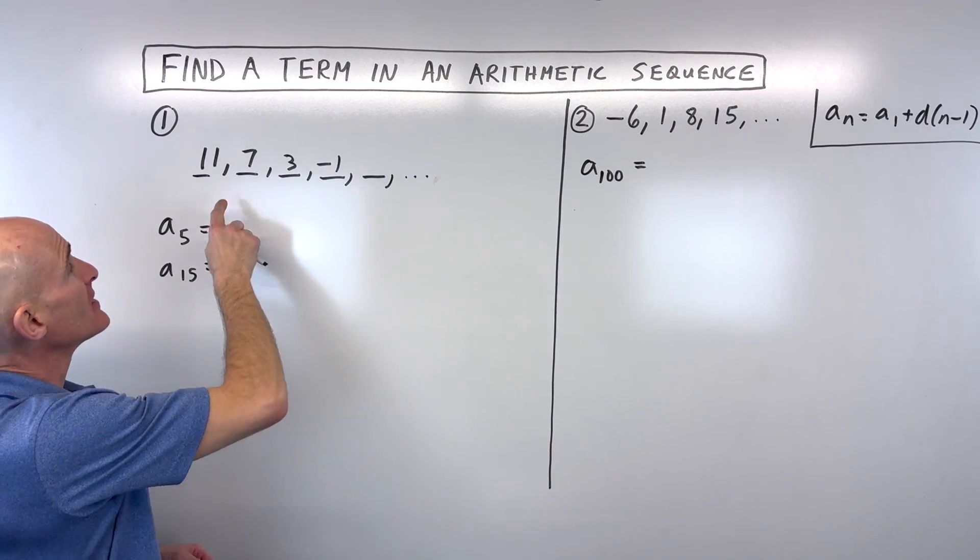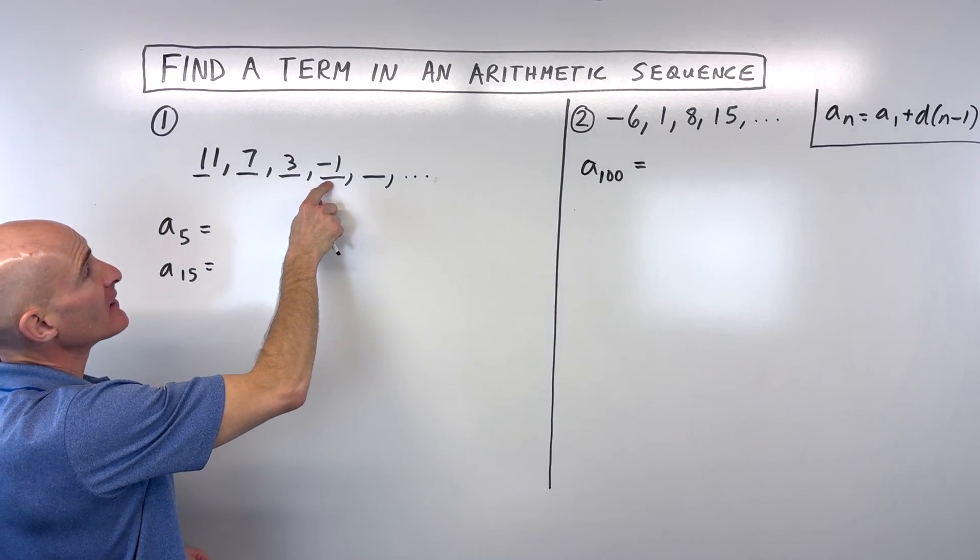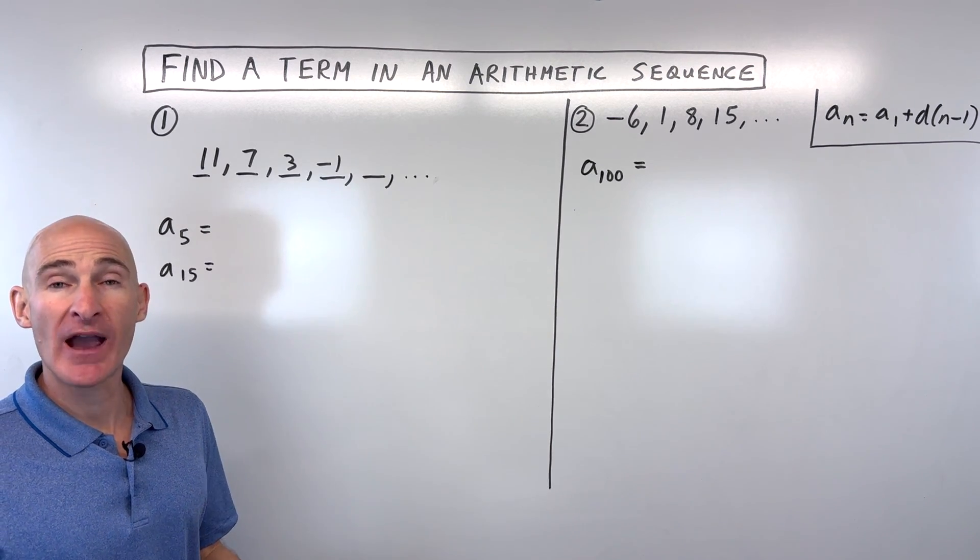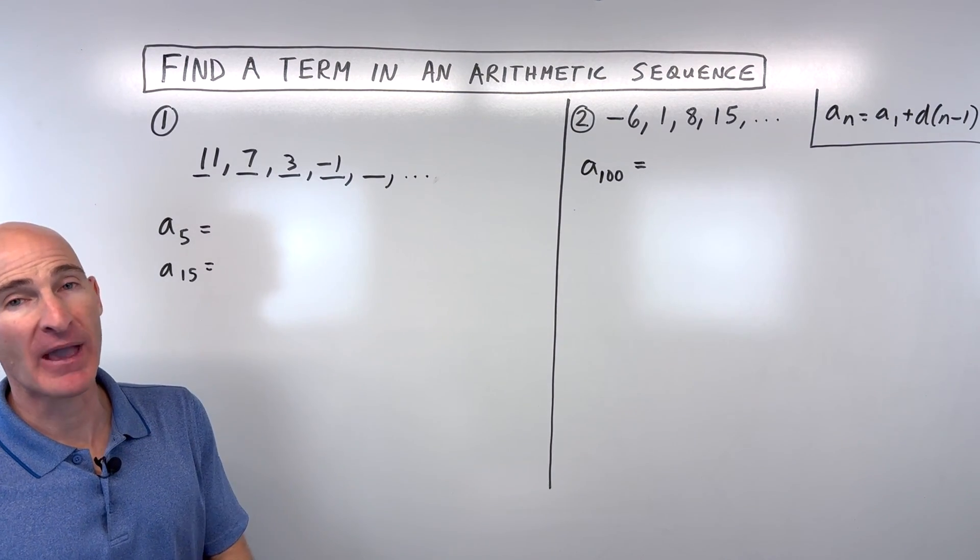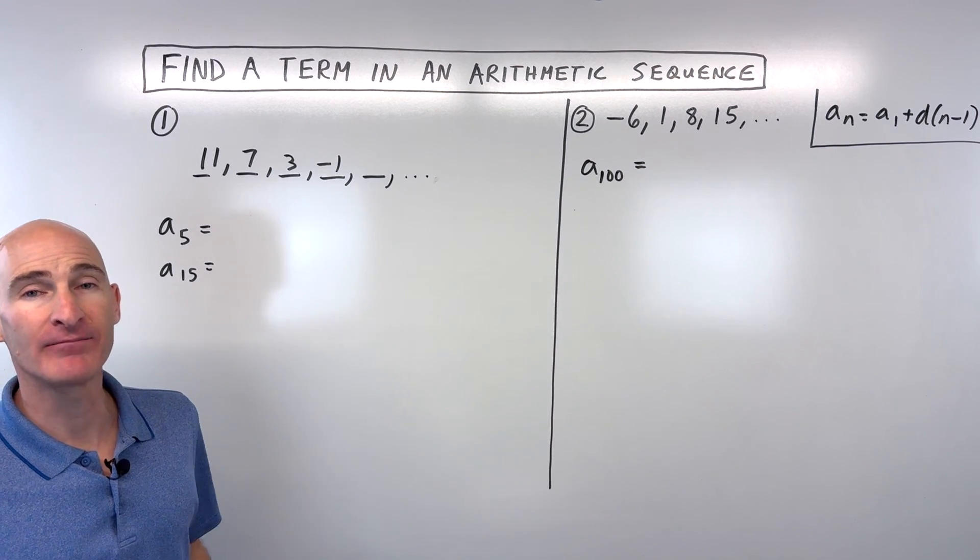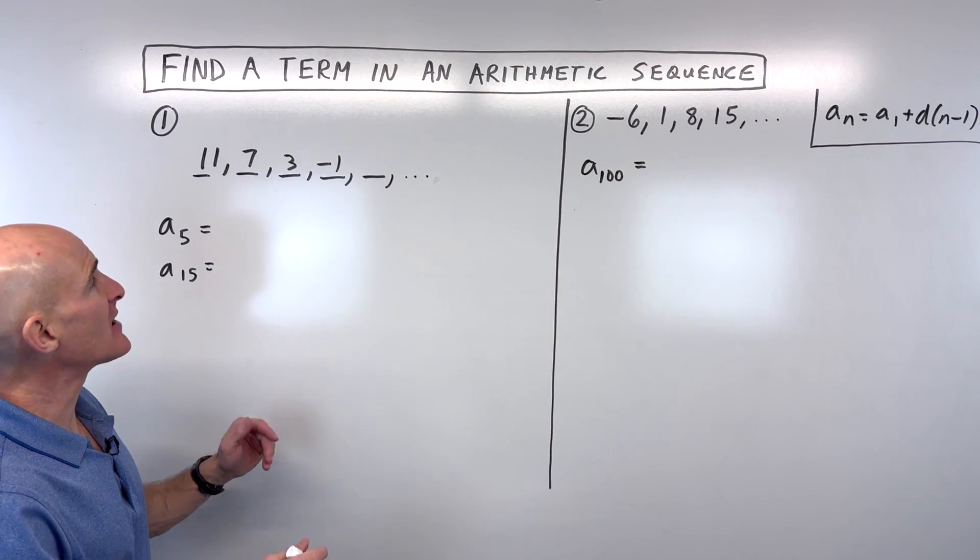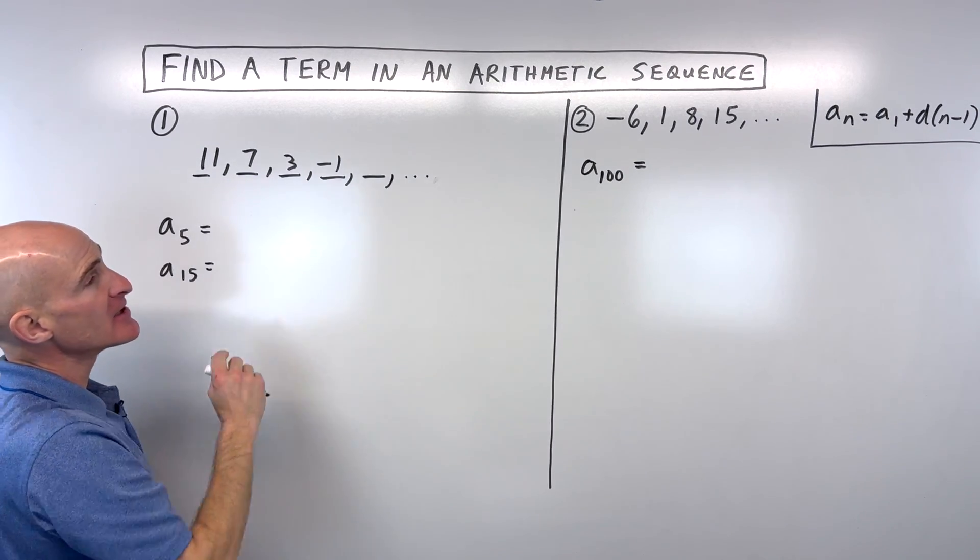Well, you might notice that we're subtracting 4 each time to get to the next term. So when you're adding or subtracting the same number each time, that's called an arithmetic sequence. If you're multiplying or dividing by the same thing each time, that's a geometric sequence. But in this lesson, we're going to talk about just arithmetic sequences.